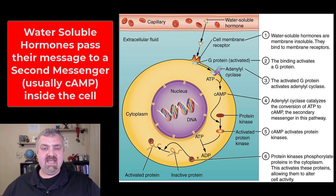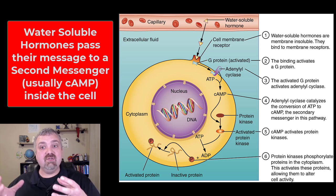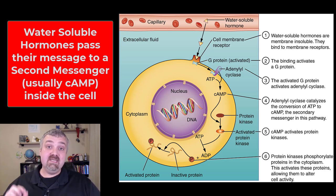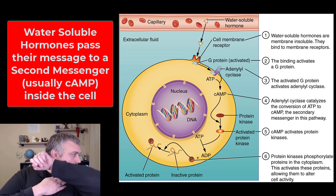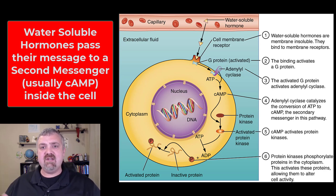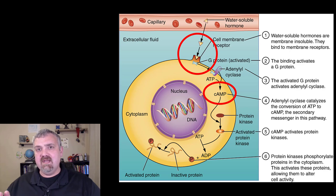Now let's look at the water soluble hormones, the ones that can't do this. They're going to be called first messengers because they actually don't enter the cell. They have to pass their message on to what's called a second messenger. The most important second messenger to remember is cyclic AMP, or cAMP. So most of your hormones are never actually going to enter cells. They're going to dock on a receptor and then the second messenger is going to take over.